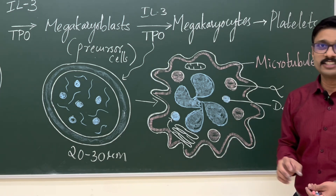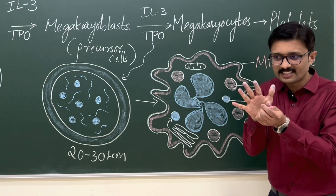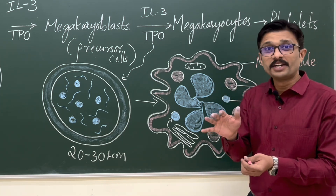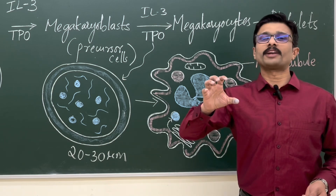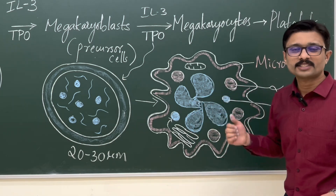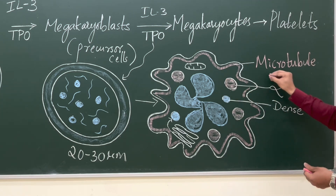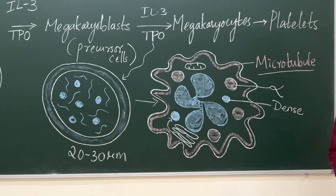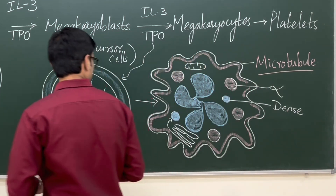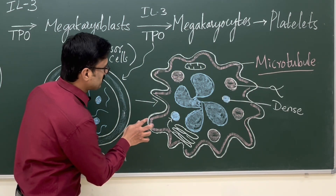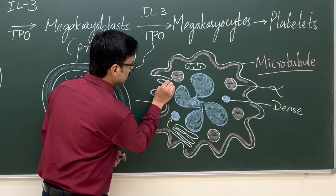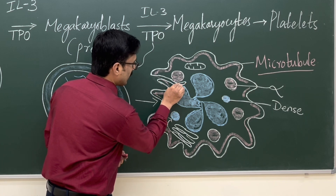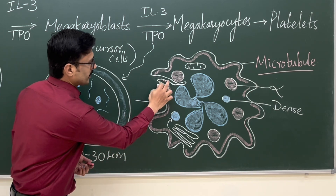This microtubule cytoskeleton maintains the integrity of the cell membrane and the disc-like shape of platelets. Platelets are disc-like structures, not spherical. Without this cytoskeleton the disc shape is altered and becomes spherical. The cytoskeleton is mainly microtubule proteins made up of polymerized tubulin. There are also invaginations of the cell membrane called the canalicular system, through which granules can release their contents to the exterior.